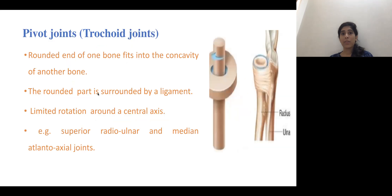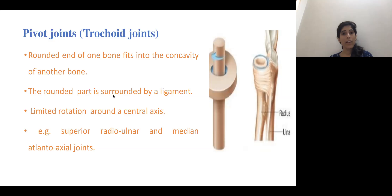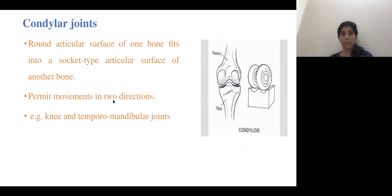In a pivot type of joint, the rounded end of one bone fits into the concavity of another bone, and the rounded part is surrounded by a ligament. The superior radioulnar joint is an example of this type.